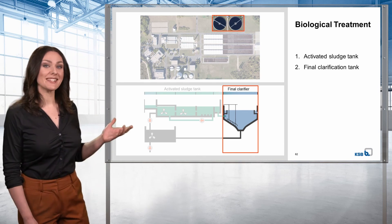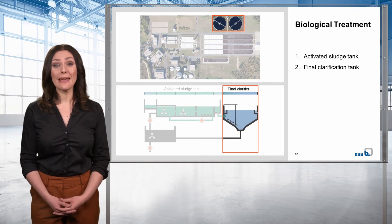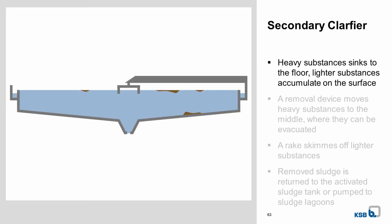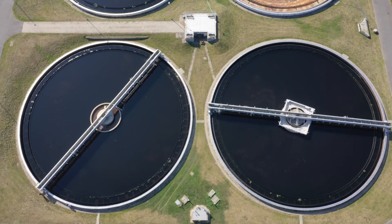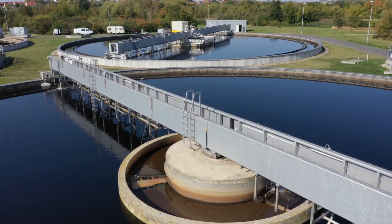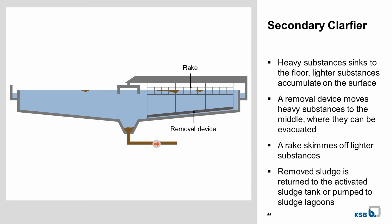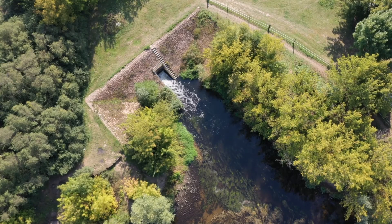Let's move on to the final or secondary clarifier, the last stage of biological treatment. The aim of this stage is to remove the microorganisms remaining in the water. Treated water flows continuously from the activated sludge tank into the final clarifier. Heavy sludge containing microorganisms sinks to the floor and lighter substances accumulate on the surface. A removal device moves the heavy substances to the middle so they can be evacuated, and the lighter substances are skimmed off by a rake. The removed sludge is either returned to the activated sludge tank or pumped to sludge lagoons, and the clarified water flows out via a drain channel. Everything taking place in biological treatment generally also occurs in nature — the only difference is that in wastewater treatment plants, the processes are carried out on an industrial basis.